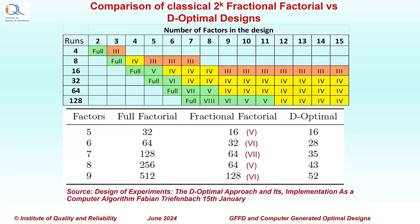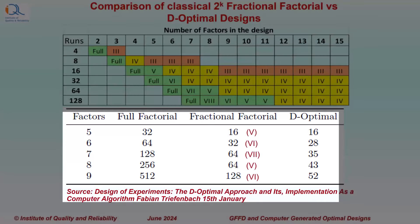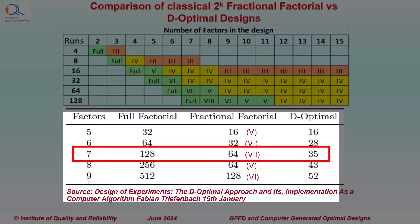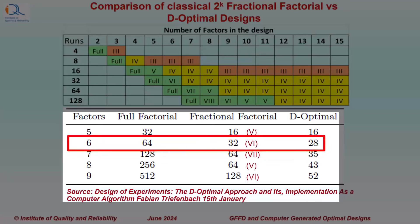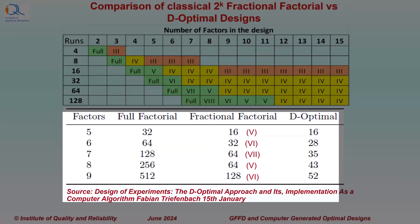Here is a comparison of classical 2-to-the-power-k fractional factorial designs versus D-optimal designs. The table shows number of factors and runs for classical designs. For D-optimal designs, for example with 7 factors, the fractional factorial design of resolution 7 will have 64 runs, while the D-optimal design of resolution 5 will have only 35 runs. For 6 factors, fractional factorial has 32 runs while D-optimal has 28 runs. The benefit of using D-optimal designs is greater when we have more factors.